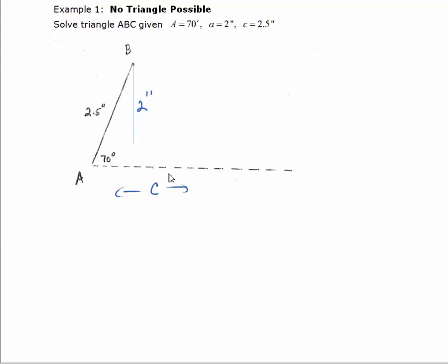Angle C would be somewhere along this line. Angle A is 70 degrees so side A is opposite it, that's 2 inches. Angle C is somewhere down here and the side opposite that would be 2.5. And so what happens here is that literally this side will never touch. It's not long enough. This 2 inches will never make it to hit side C and so there's no triangle possible.